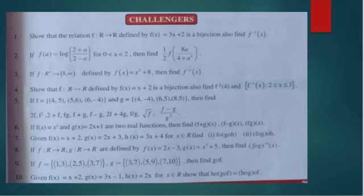Third question: f from [8, ∞) to R is defined by f(x) = x² + 8, find f inverse of x. Fourth question: show that f from R to R defined by f(x) = 3x + 2 is a bijection, also find f inverse(1/4) and f inverse(x).